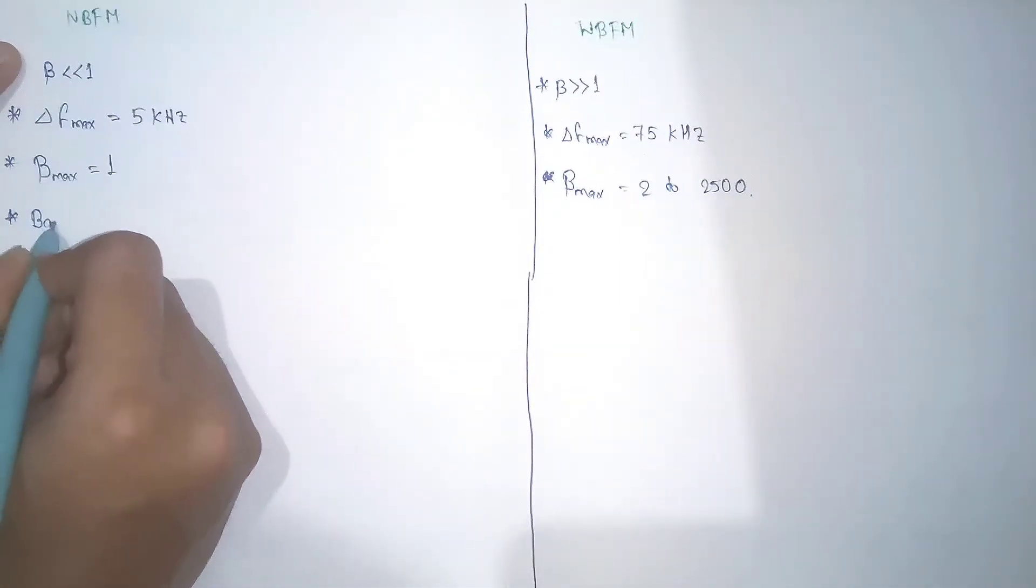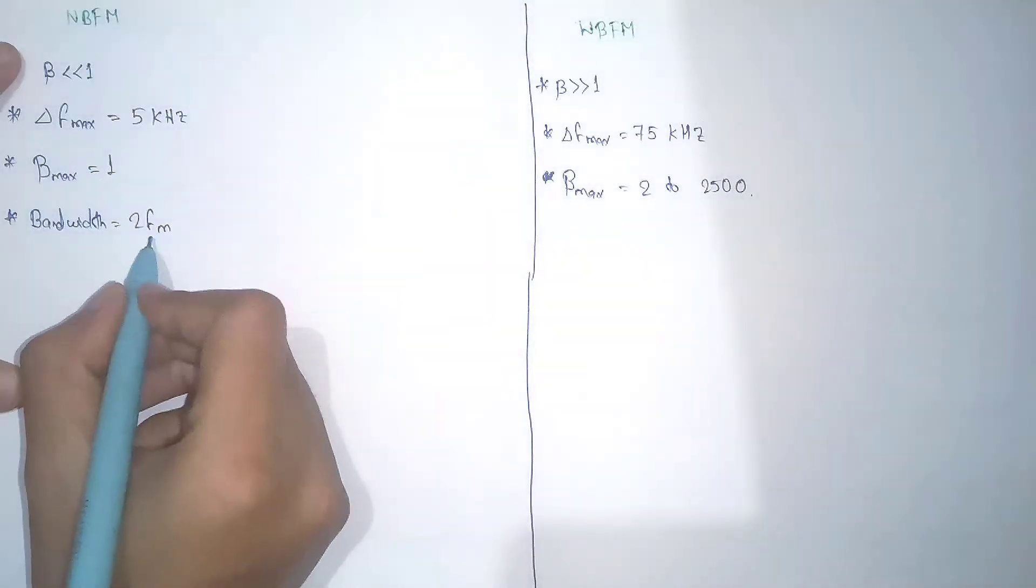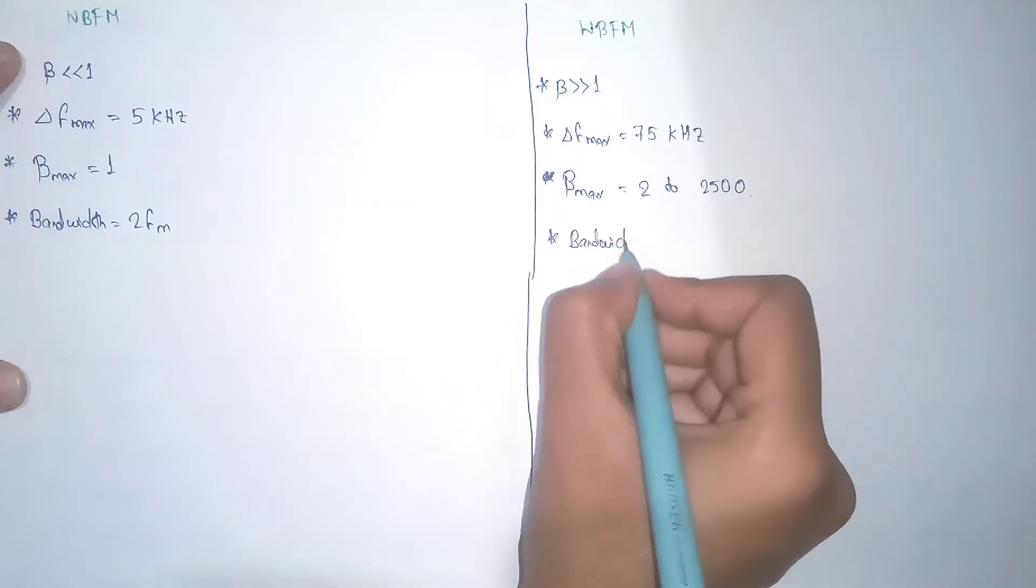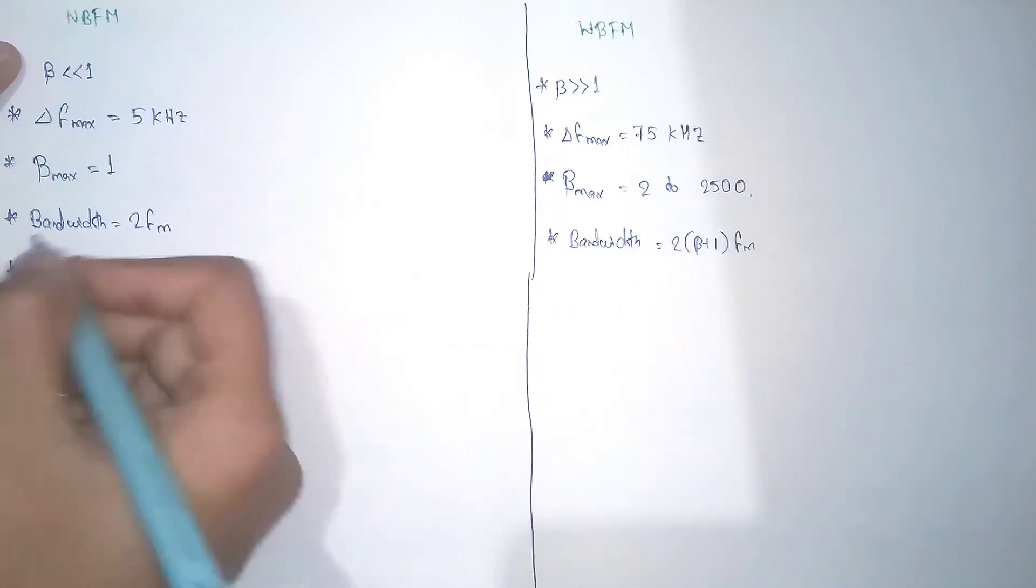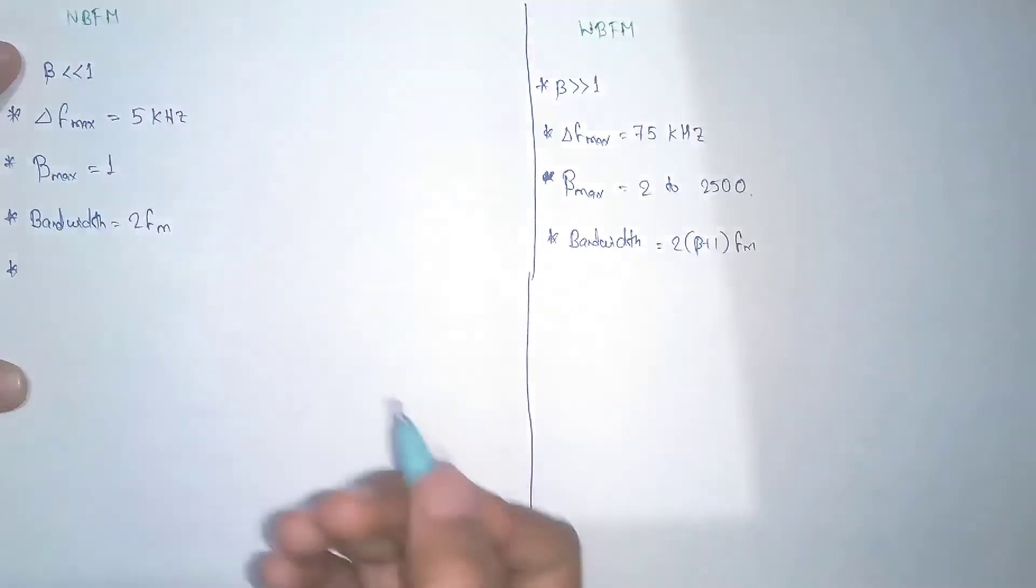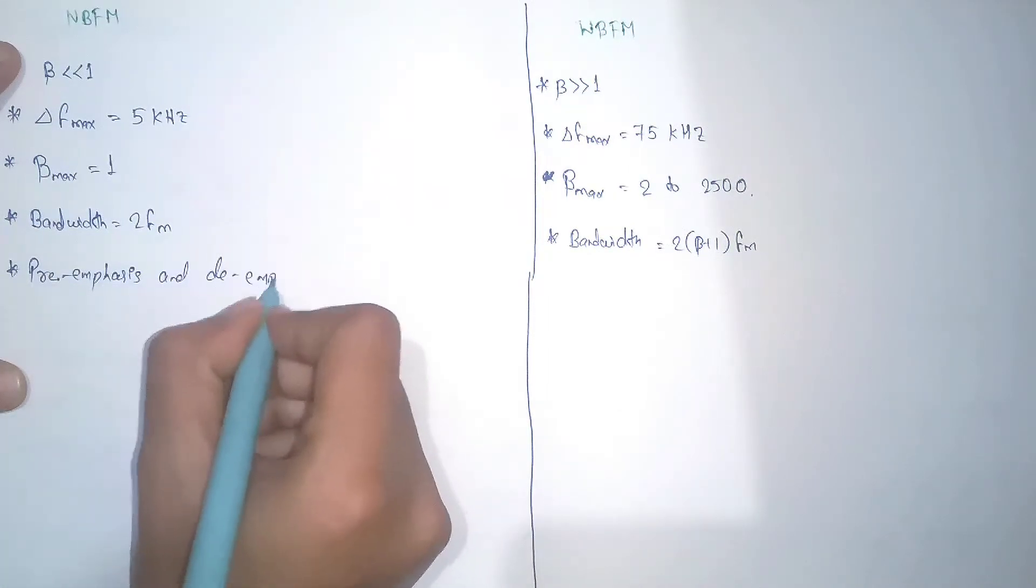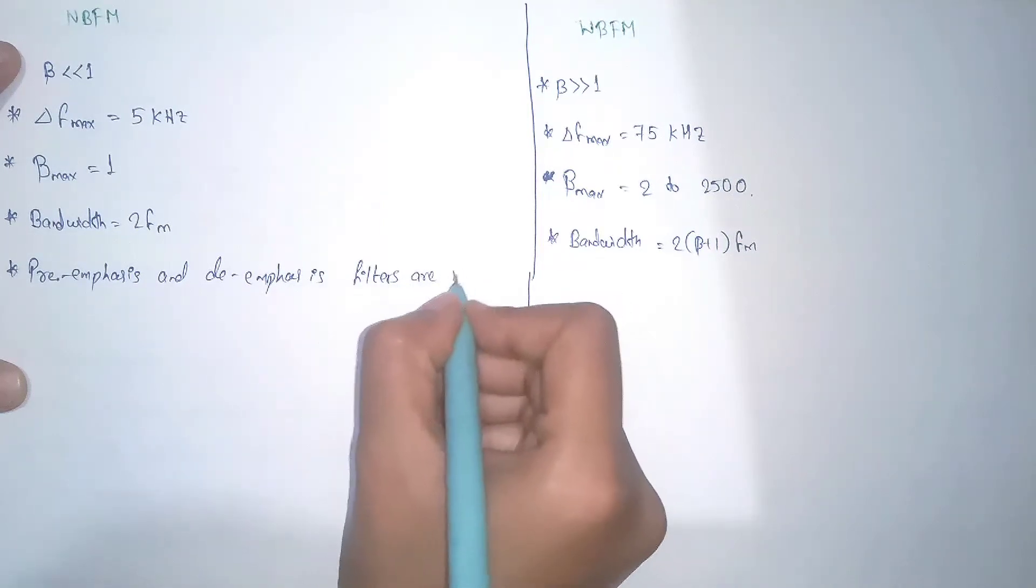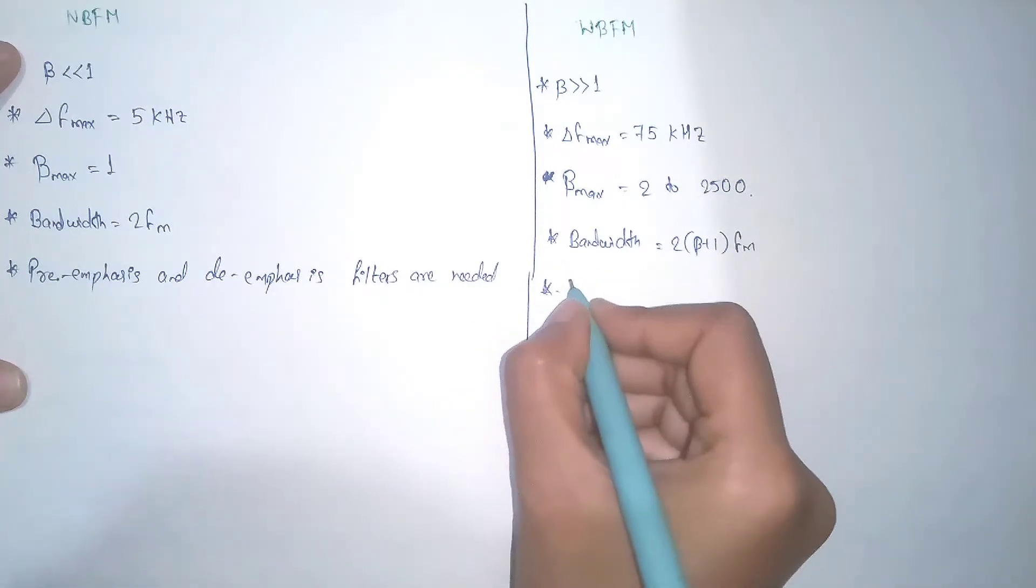And the next point we can write is bandwidth equals 2 fm, where fm is the message signal frequency. And here the bandwidth equals 2 times beta plus 1 times fm. And here the pre-emphasis and de-emphasis filters are needed in narrowband FM, and in wideband FM also these both are needed.